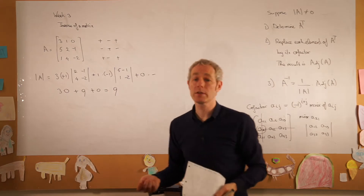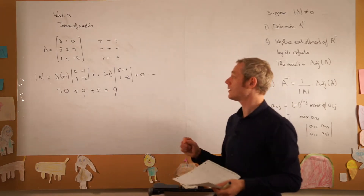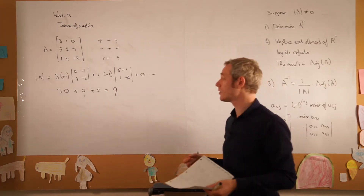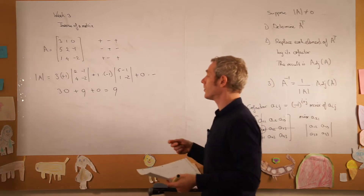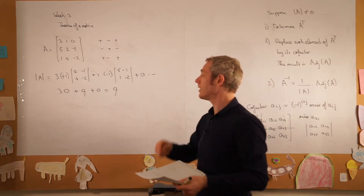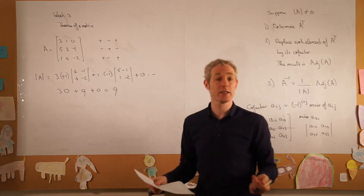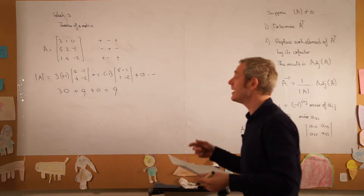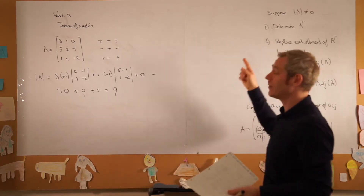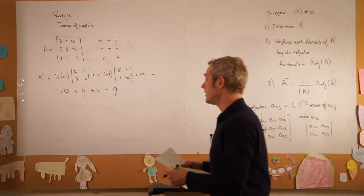So the determinant of matrix A — and I know I've done this fairly quickly, but see the previous videos to learn more — is equal to 9. And 9 is not equal to 0, so matrix A has an inverse and we can continue with the steps.